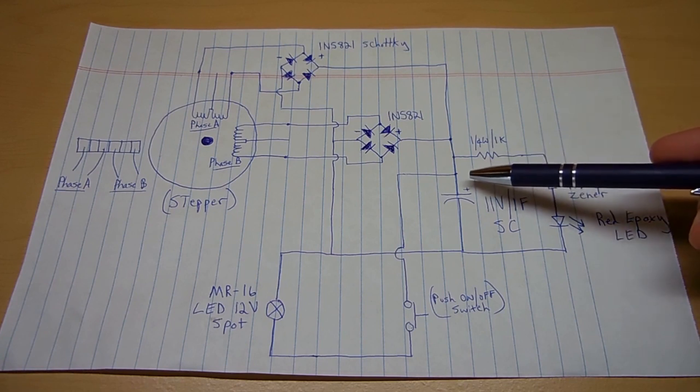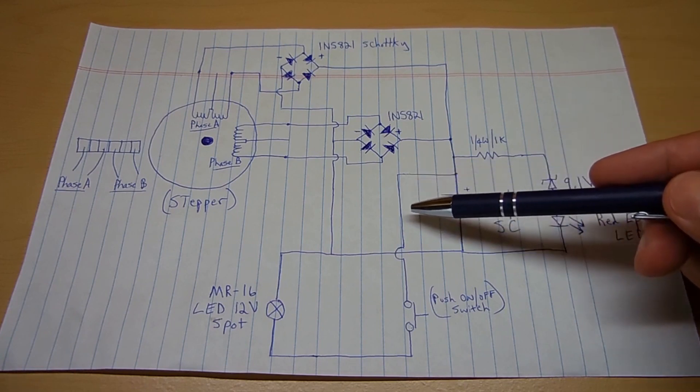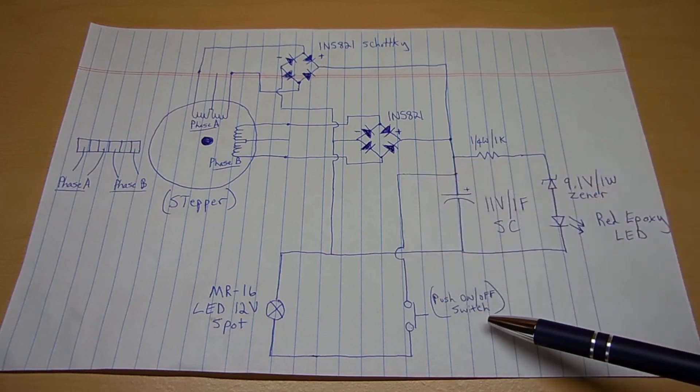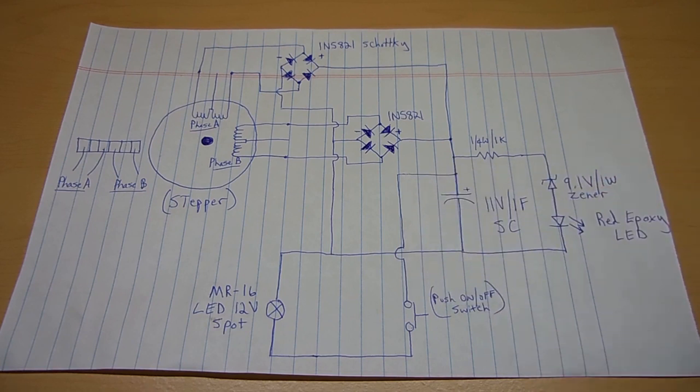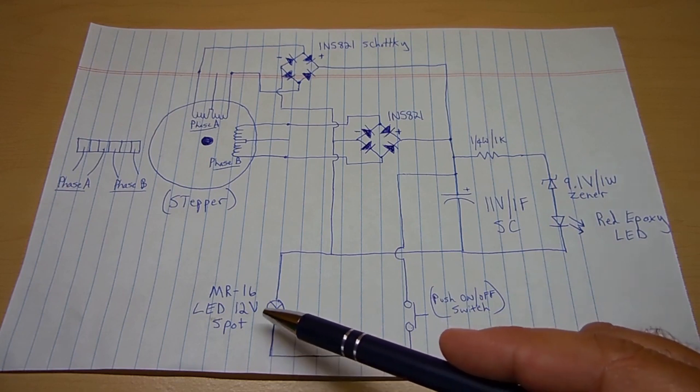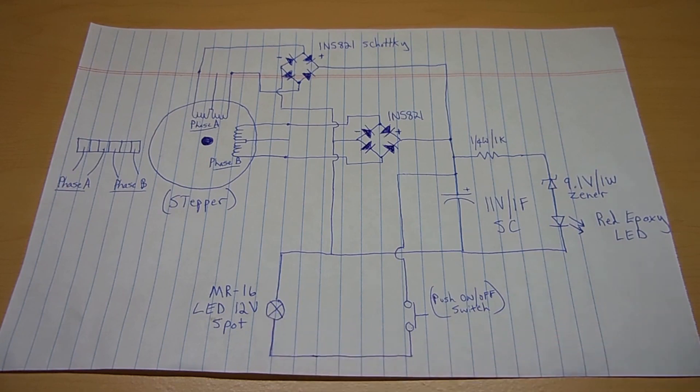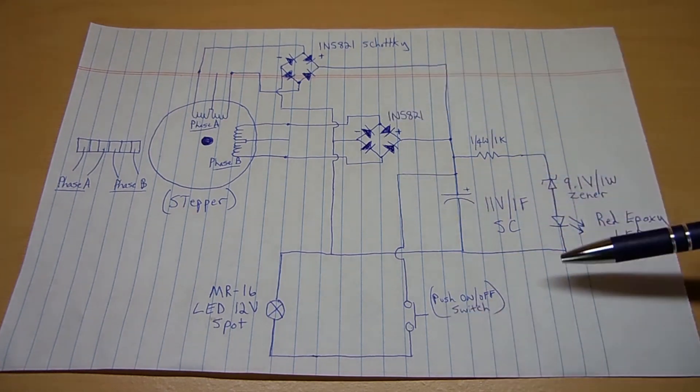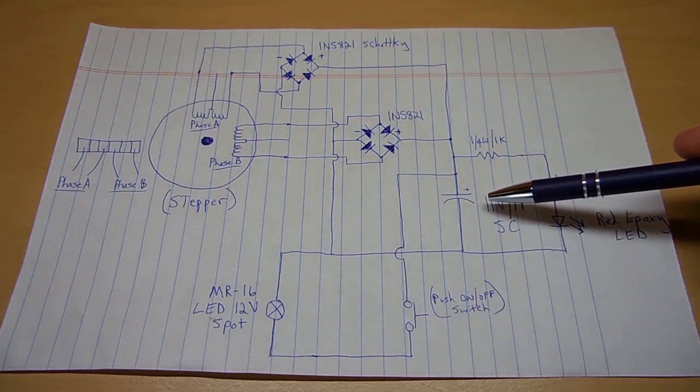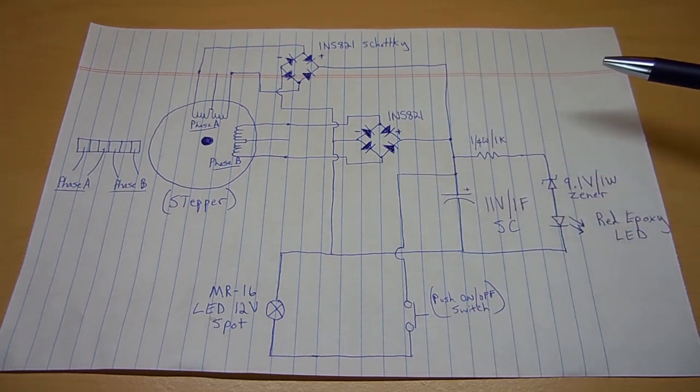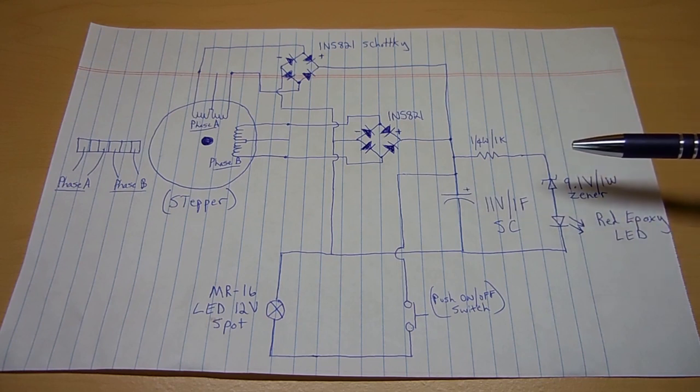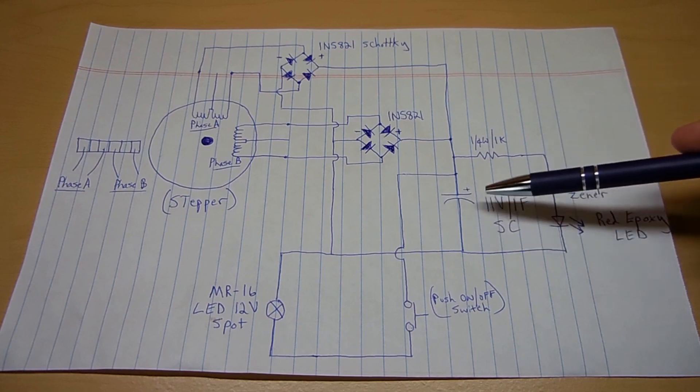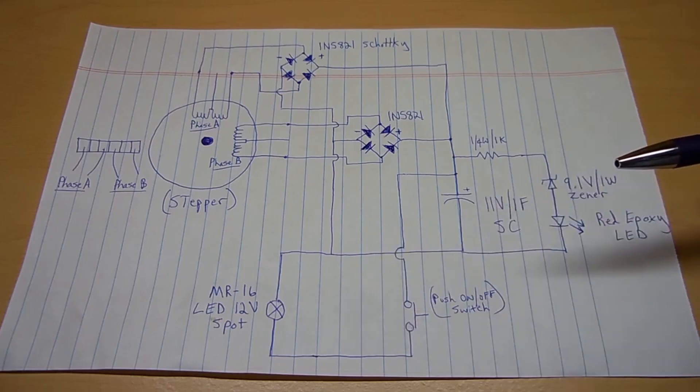Over here at the positive of the supercapacitor, you can see it flows down this way, and it goes into the push on, push off switch. And all the push on, push off switch does, is disconnect power from that MR16 LED spotlight, which is 12 volts. If this was left in the on position, then as you're cranking, you're going to charge the supercapacitor, and the light will start coming on at the same time. The more you crank, the charge will get higher in the supercapacitor, and the light will get brighter.